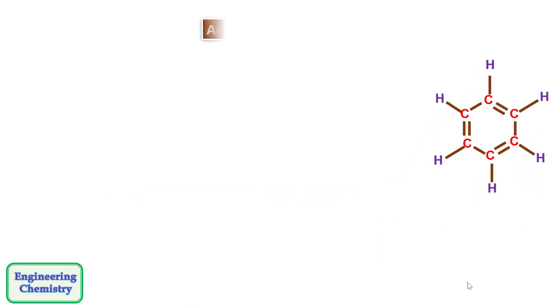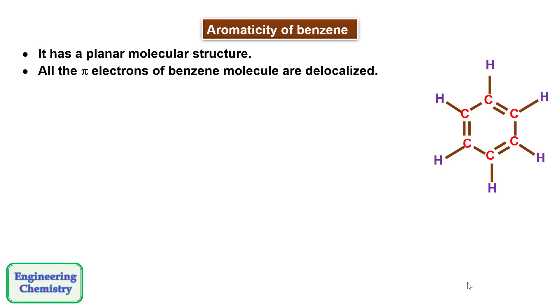Let's understand the aromaticity of benzene. Benzene has a planar molecular structure. All the pi electrons of benzene molecule are delocalized. All the carbon atoms of the benzene molecule are sp2 hybridized.